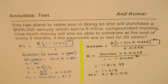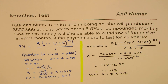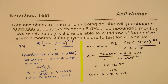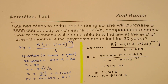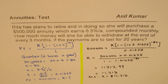So that is how we solve it. The major thing is to understand whether this is a case of present value annuity or future value, so you use the right formula to get the right result. I'm Anil Kumar — please share and subscribe to my videos. Thank you and all the best.